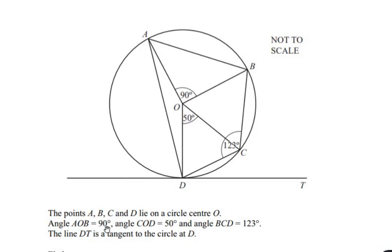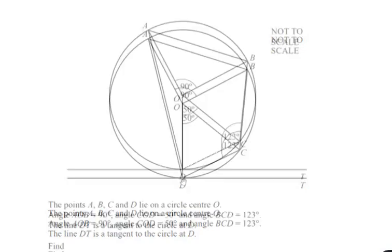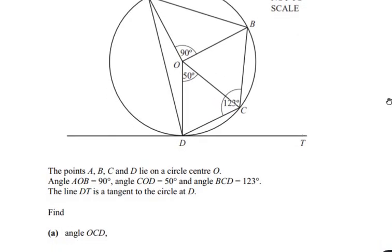Angle AOB is given as 90 degrees, angle COD is given as 50 degrees, and angle BCD is given as 123 degrees. The line DT is a tangent to the circle at point D. Find the angle OCD — so we are supposed to find the angle OCD, that is this small angle.